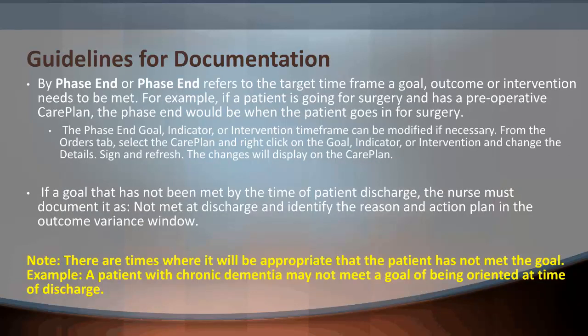The term 'by phase end' refers to the target time frame for a goal, outcome, or intervention that needs to be met. For example, if a patient is going for surgery and has a preoperative care plan, the phase end would be when the patient goes in for surgery. The phase end goal, indicator, or intervention time frame can be modified if necessary. Simply go to the Orders tab, select the care plan, and right-click on the goal, indicator, or intervention and change the details. Sign and then refresh the screen — the changes will now display on the care plan.